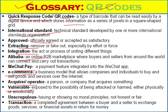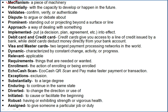Unscrupulous: having or showing no moral principles. Transactions: a completed agreement between a buyer and seller to exchange goods and services. Mechanism: a piece of machinery. Potentiality: the capacity to develop or happen in the future. Validates: confirm or verify. Dispute: to argue or debate about. Prominent: standing out or projecting beyond a surface. Debit card and credit card: credit cards give you access to a line of credit issued by a bank, while debit cards deduct money directly from your bank account.